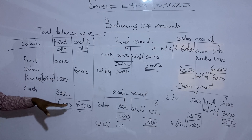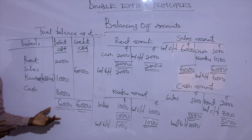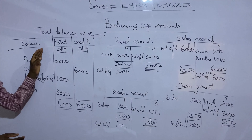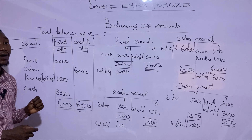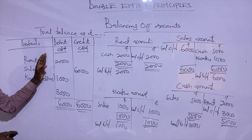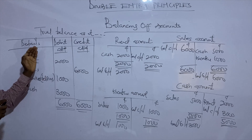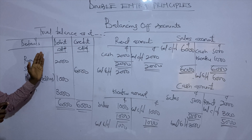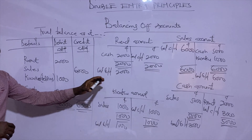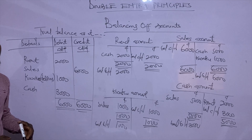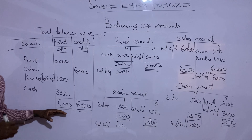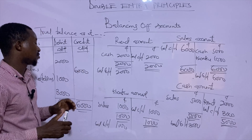The total of the debit column is 6,000 and the total of the credit column is also 6,000, so we say the trial balance has balanced, meaning the entries were made correctly. This trial balance helps us check the arithmetic accuracy of the account balances and also helps us detect errors. However, note that not all errors are detected by the trial balance. For example, if you completely omit a transaction, your trial balance will still balance with a different figure — so some errors, like errors of omission, do not affect the agreement of the trial balance.